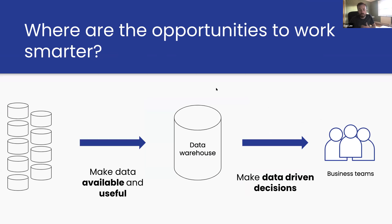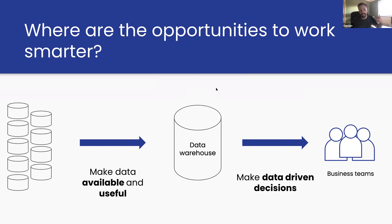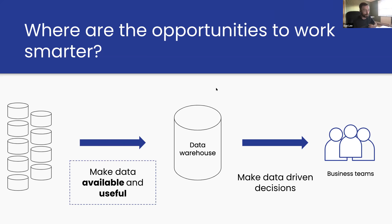At a high level, a data team's workload has two parts: making data available and useful, and then — once that data is in the warehouse — helping business teams make sense of it for operational decision making, or even powering products and services. For this talk, I'll focus on making data available and useful. Traditionally, this has been bundled into the three-letter acronym ETL.